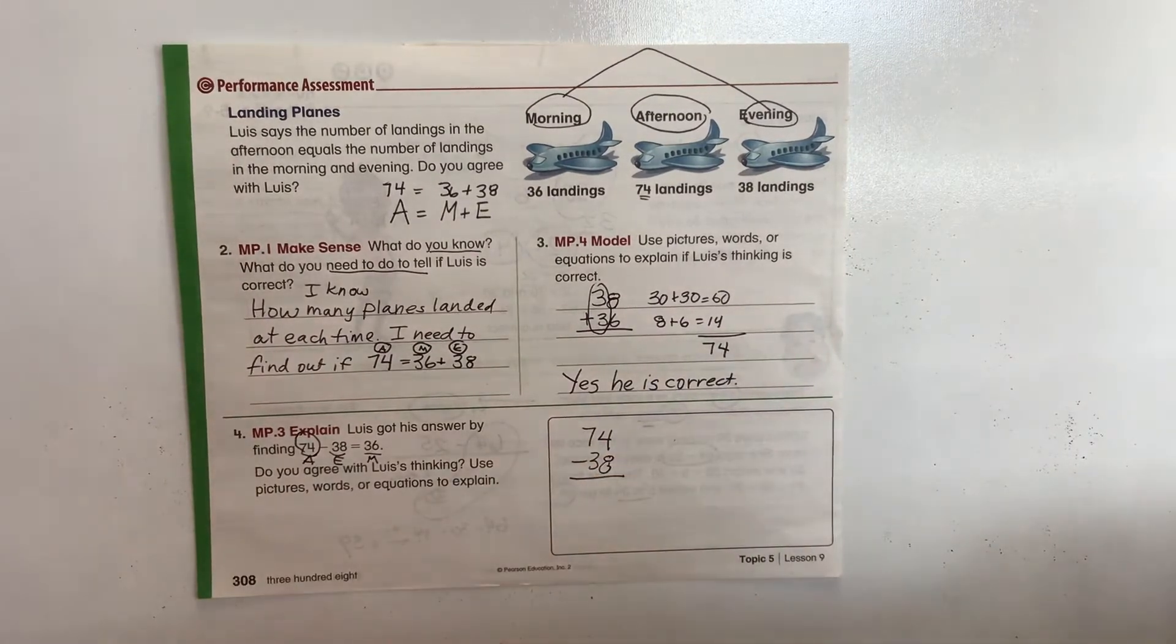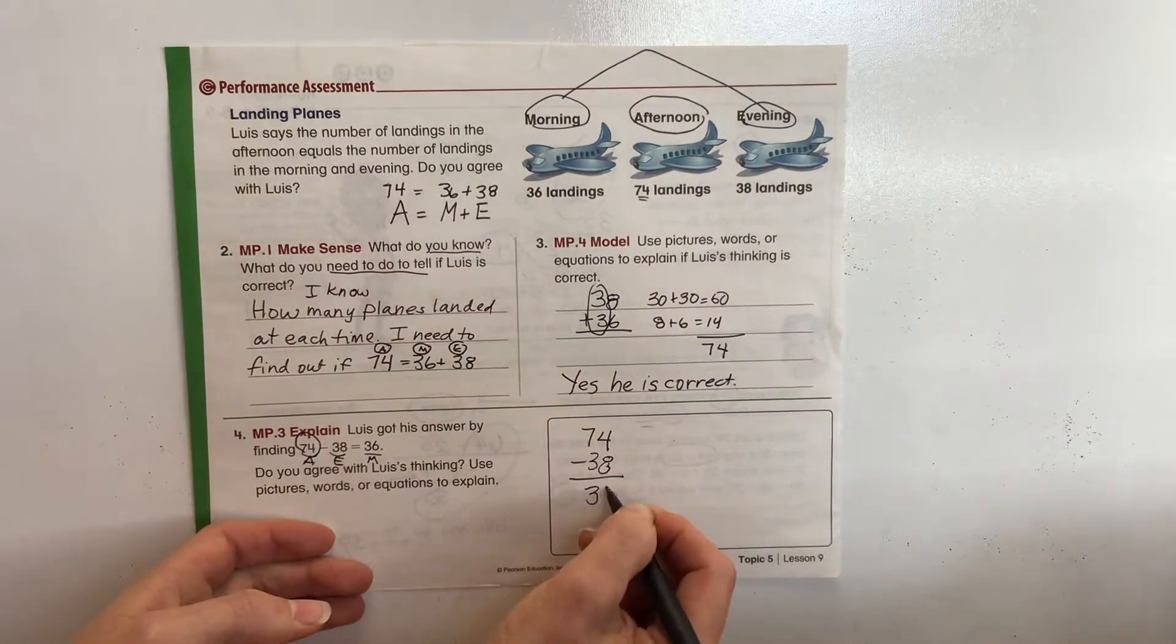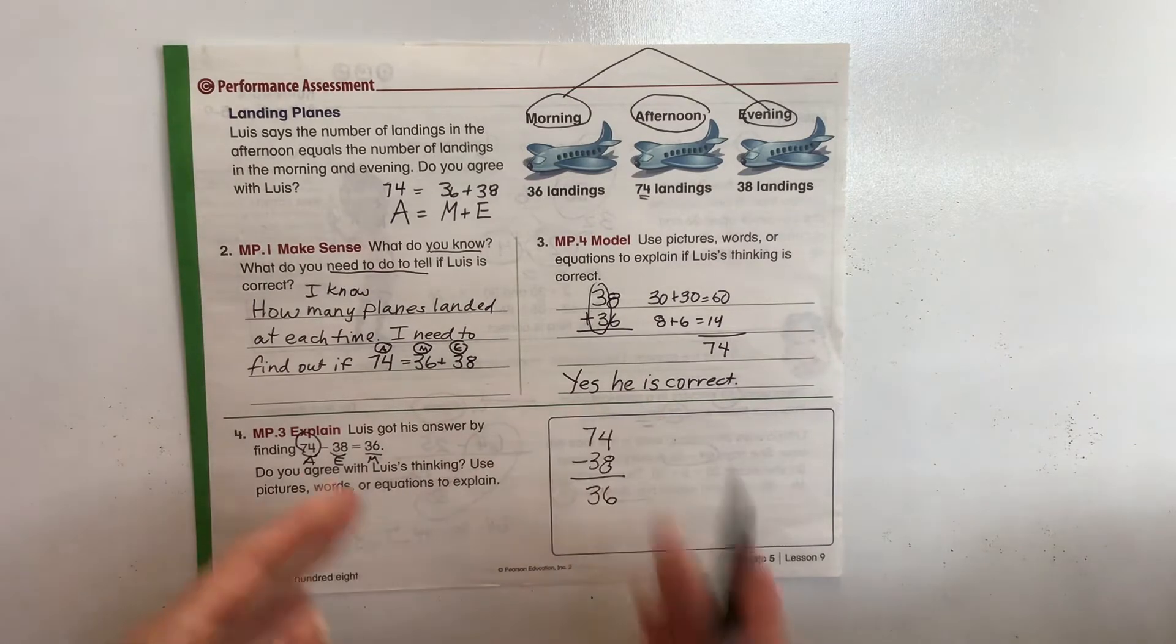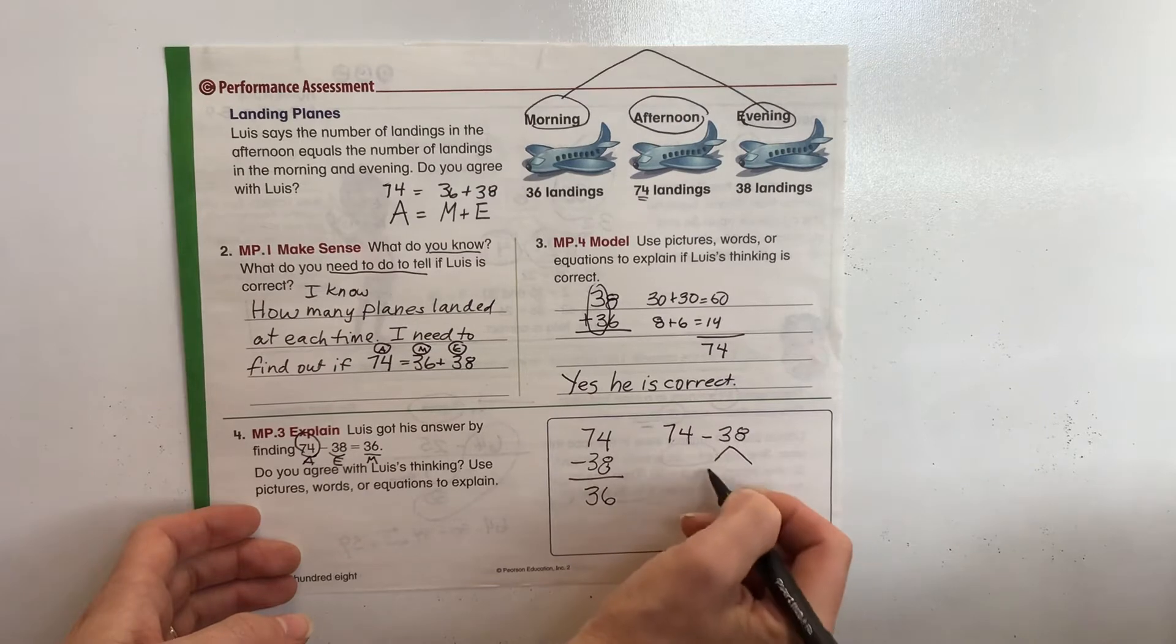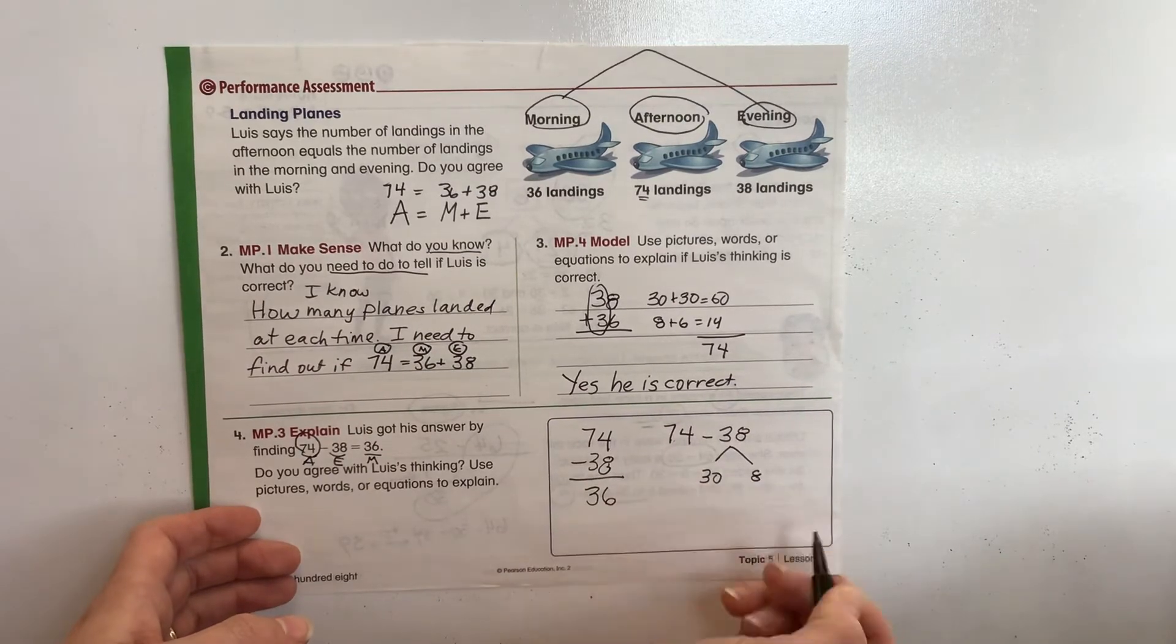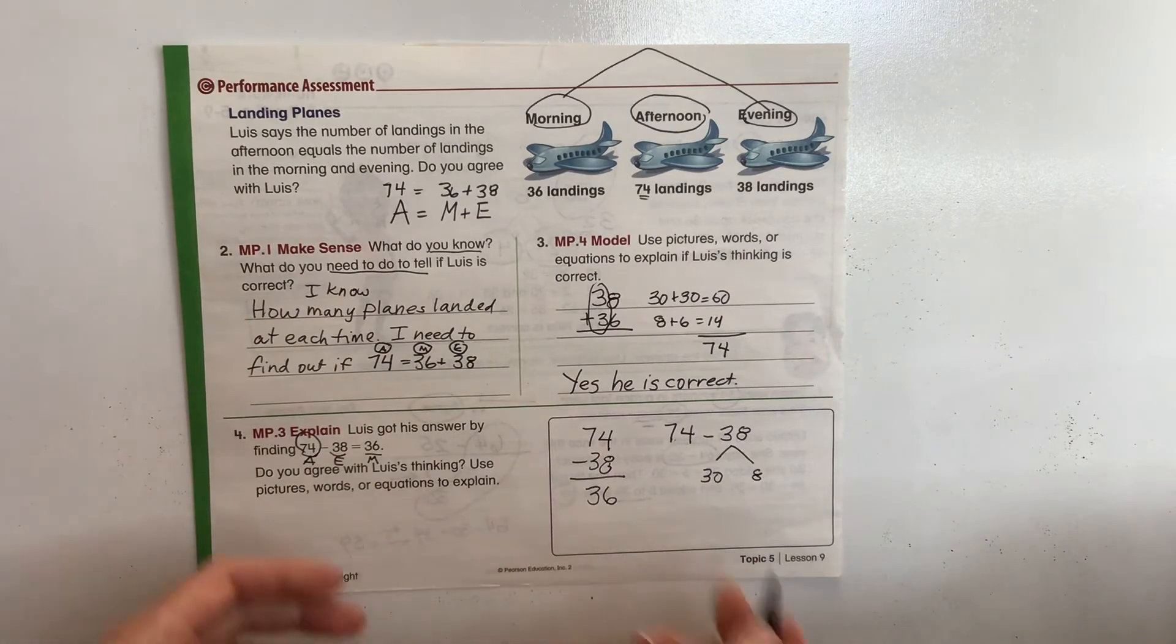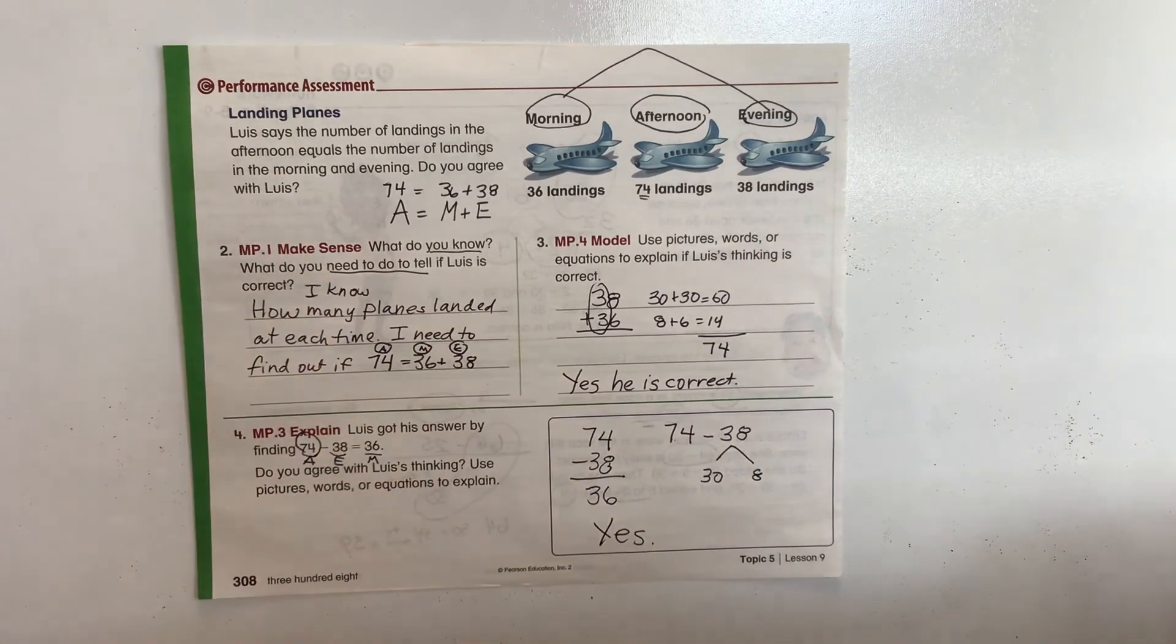Do we agree with him on how he did it? So does 74 minus 38, and again, the students can do it however they would like to, equal 36? So they can go through and use number lines. They can break it up in our old style that we do, minus 38. They can separate that into 30 and 8 and go through. And they will find that it is correct, that he is correct in his way of doing that.